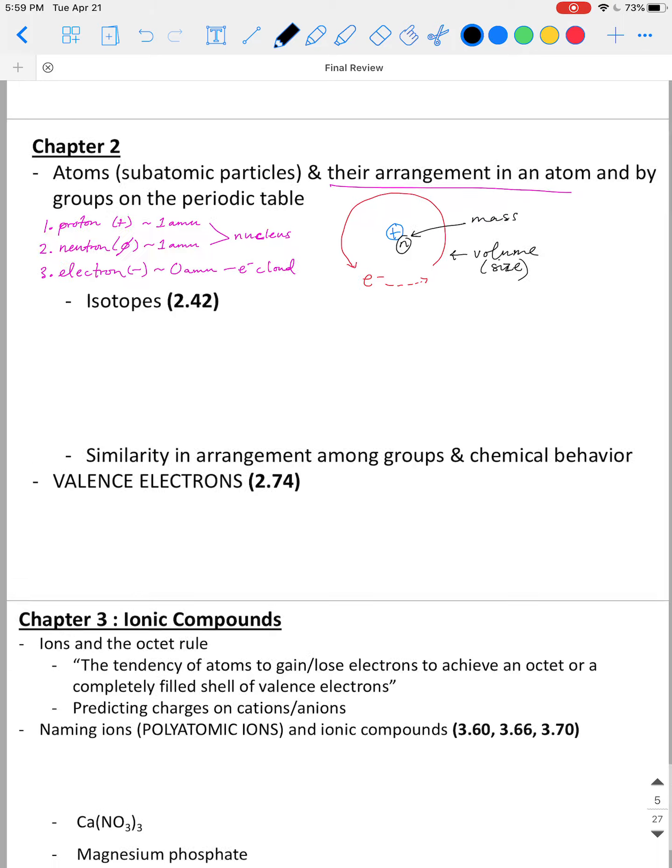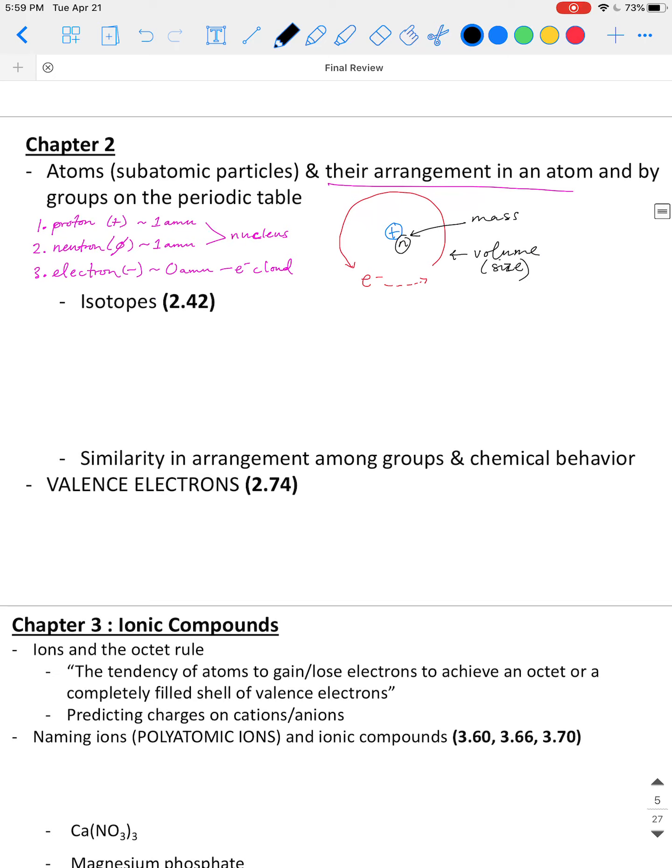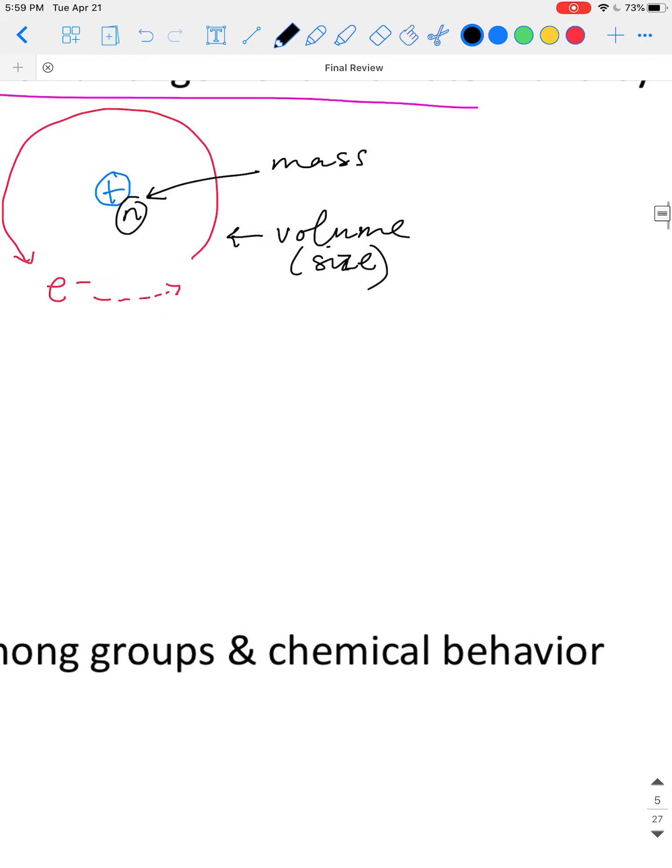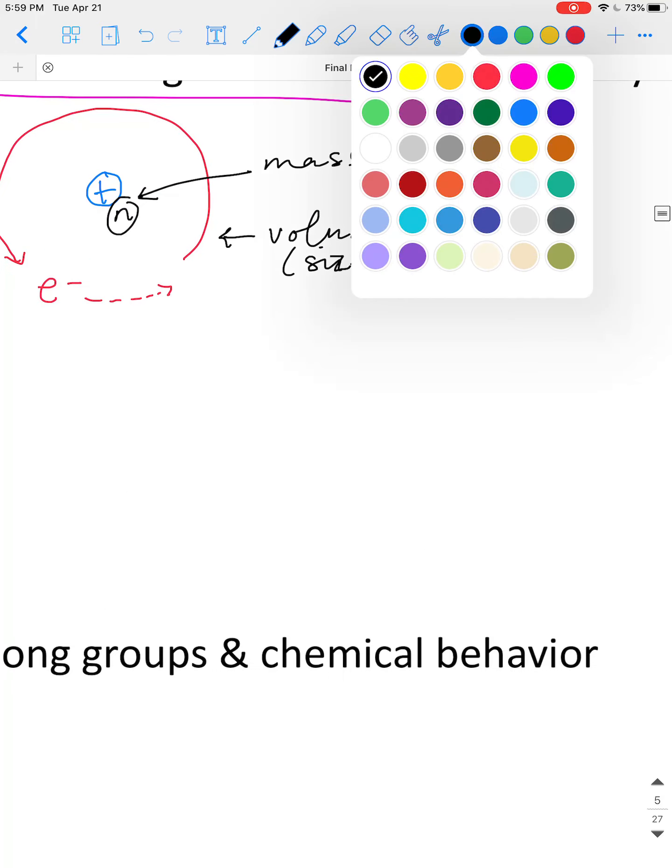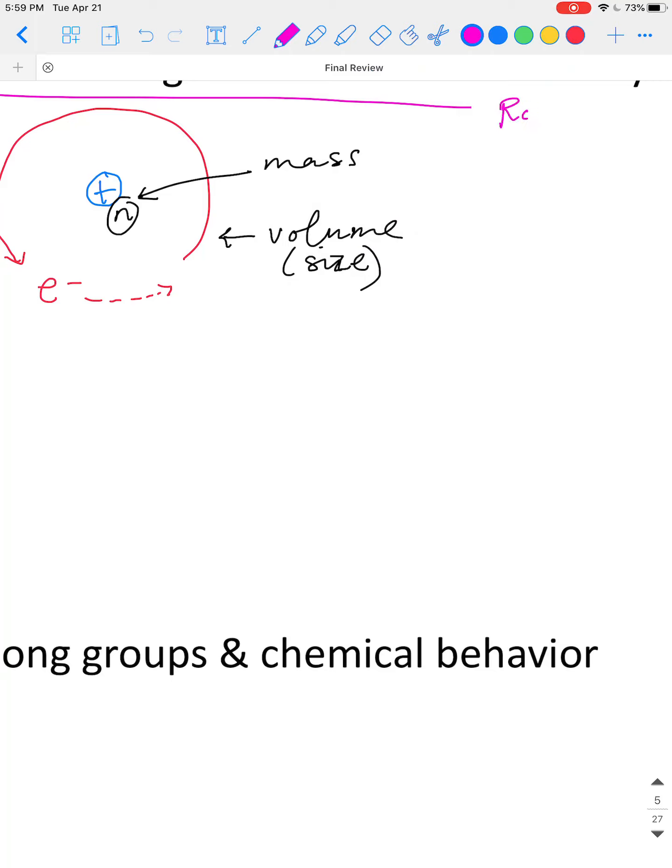This is where all the mass of the atom comes from. And the electron cloud is where the volume or size of the atom is made up. So know those words and their charges and their masses and their placement and their role in the atom. Remember that we identify atoms based on how many protons they have.